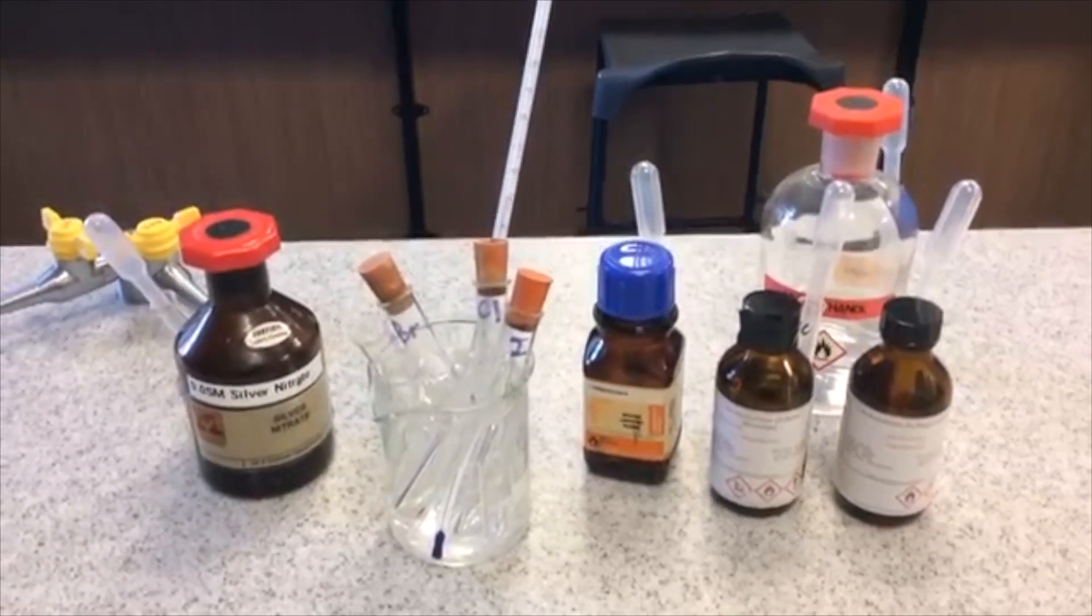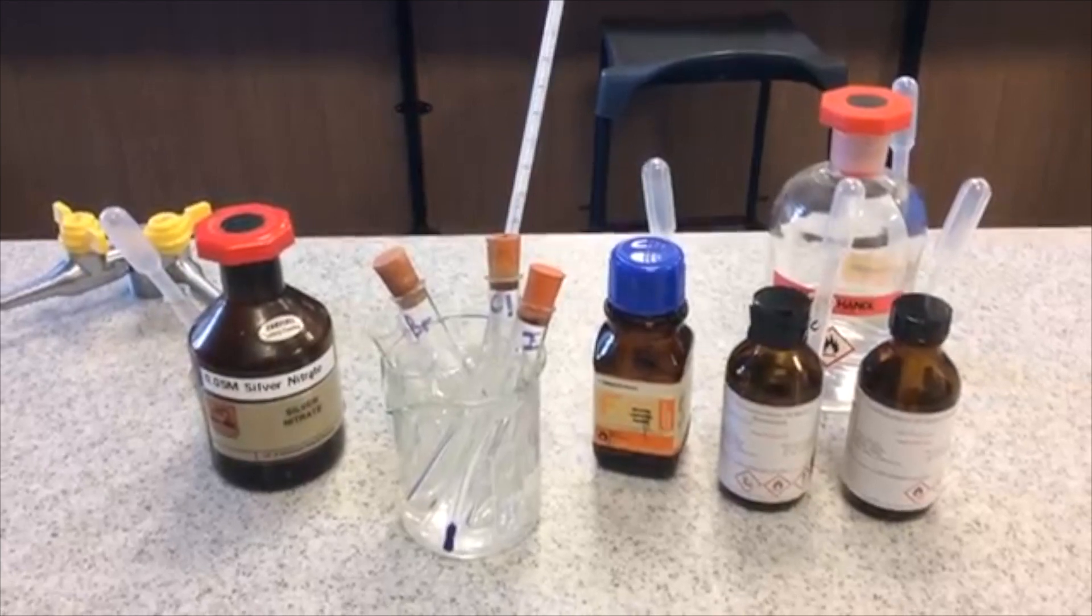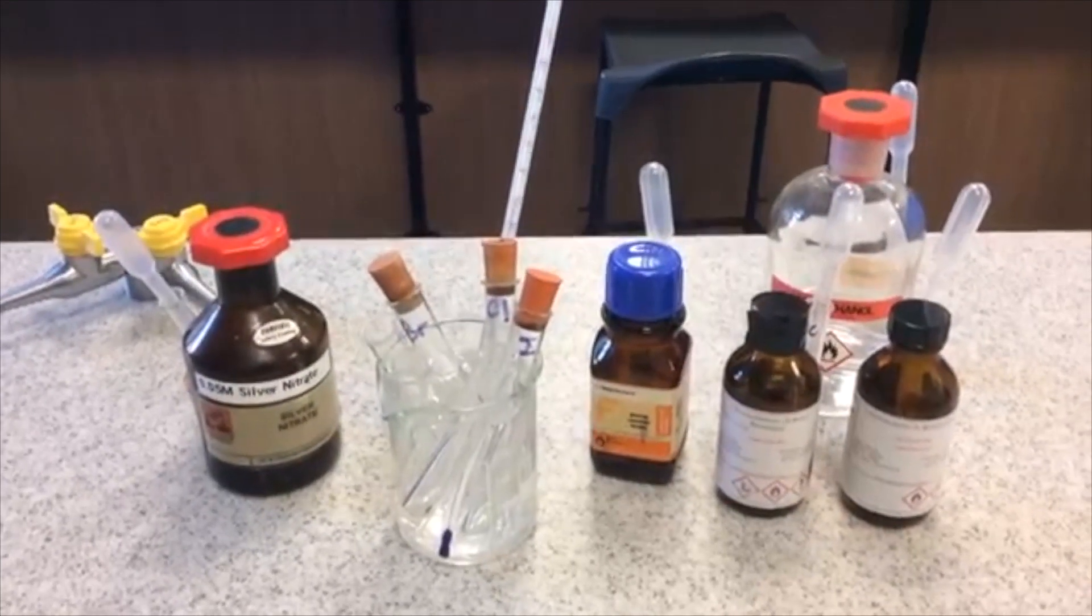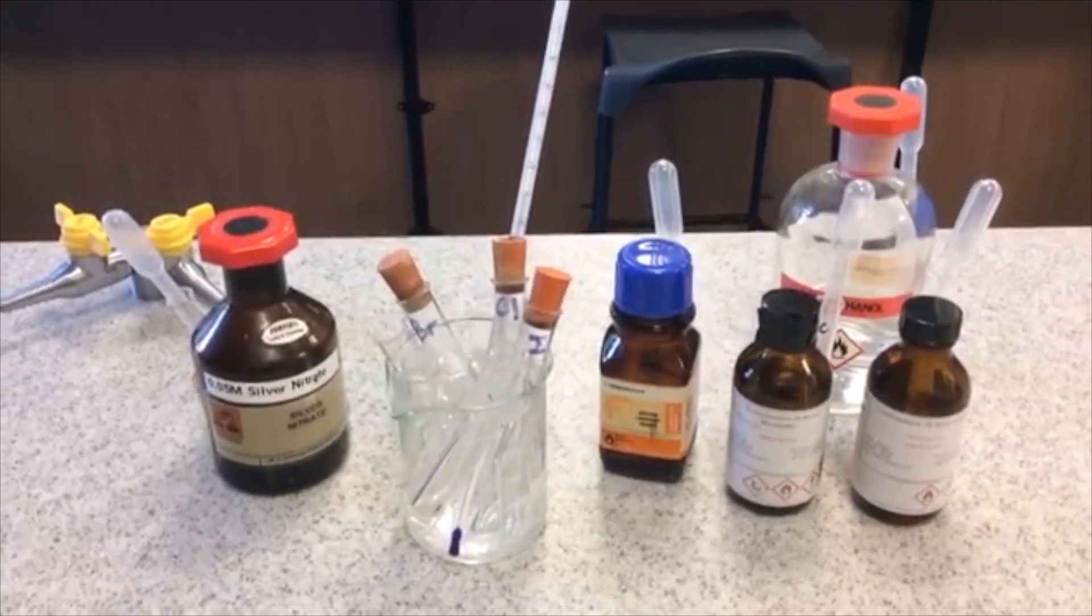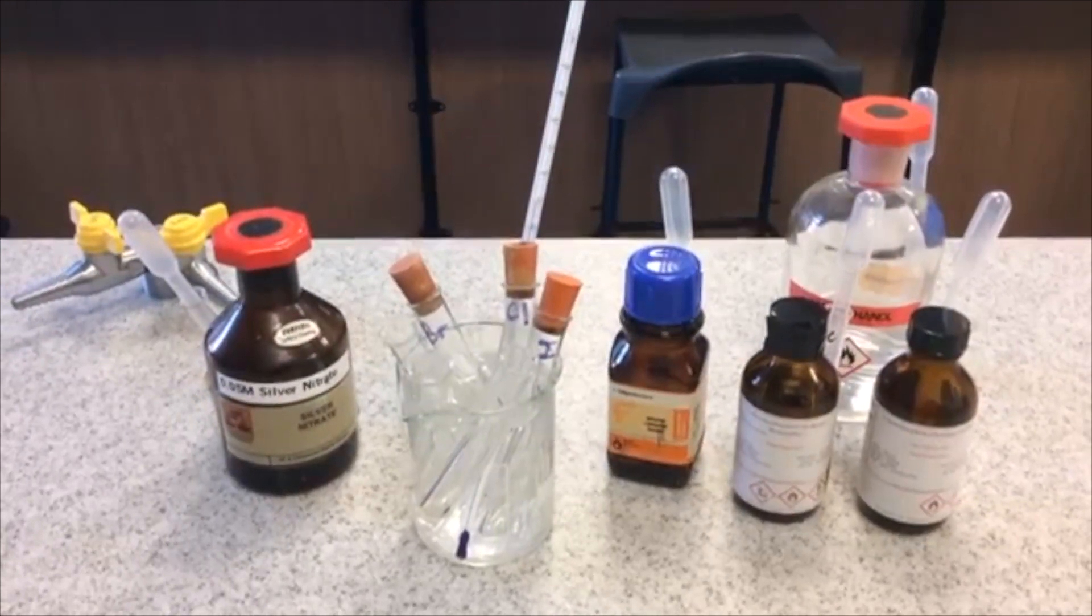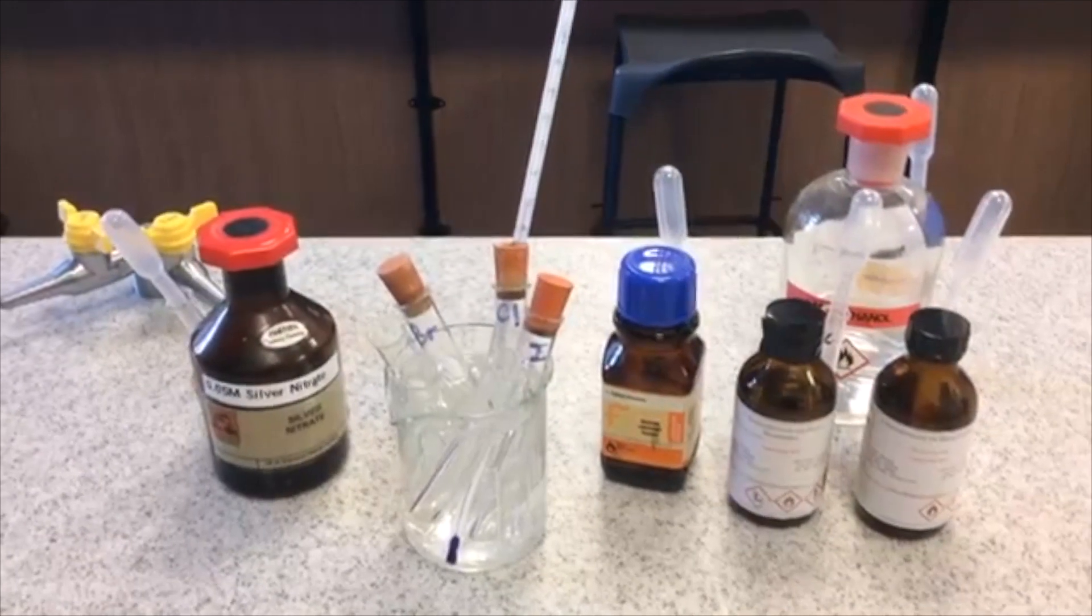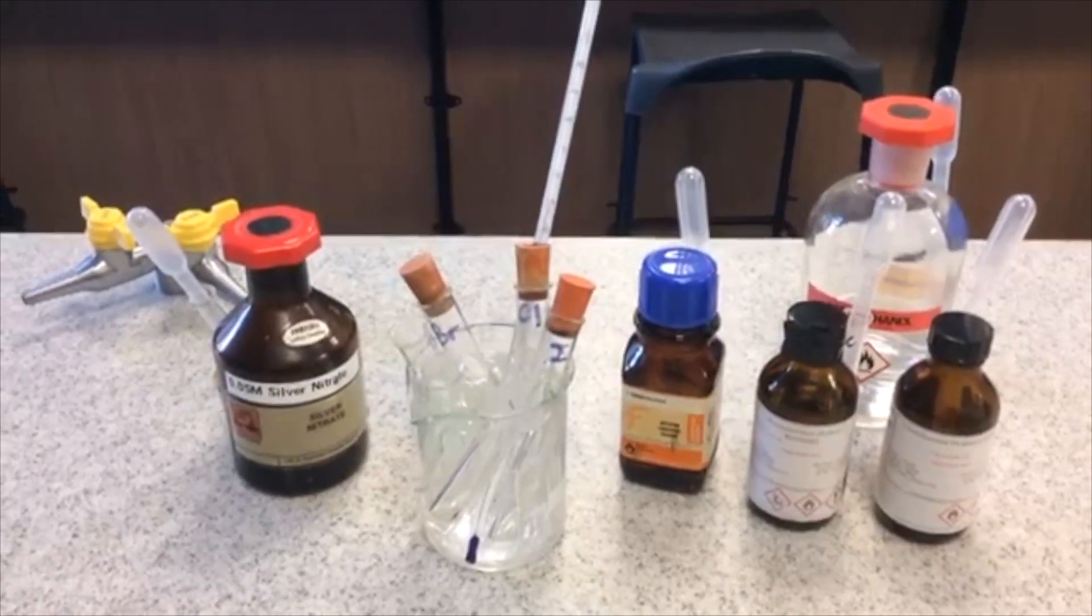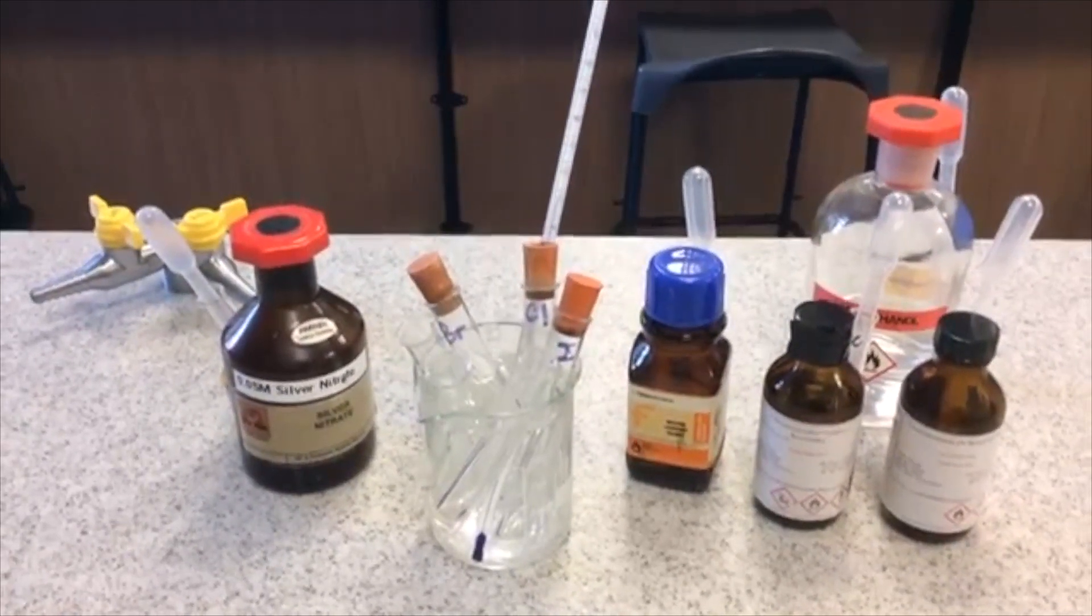I've got my three labeled test tubes: the BR test tube has the bromobutane in, the CL has chlorobutane, and so on. They're in ethanol, and the test tubes without any rubber bungs have the silver nitrate solution in.